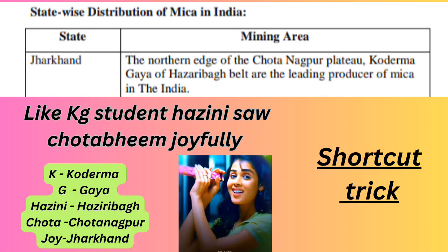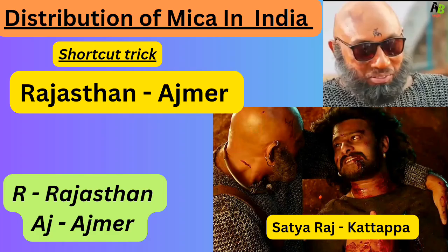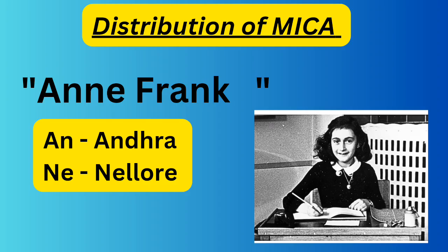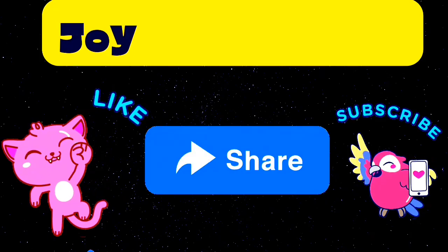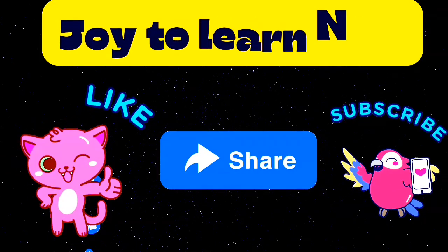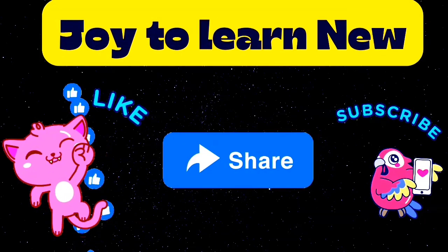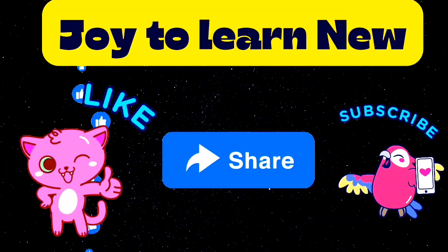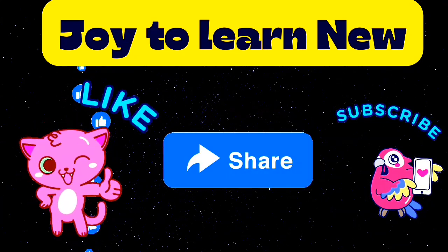Let's recall all shortcuts once again: the first is 'Like KG student Hasini saw Chota Bim joyfully,' the second is 'Satya Raj,' and the third is 'Annie Frank.' Hope you liked this video — if so, please give a thumbs up and share it with your friends.